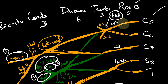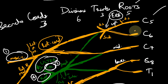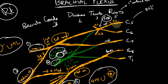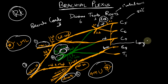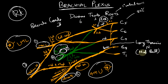From the C5 root arises the dorsal scapular nerve, also called the nerve to the rhomboids. A nerve arising from contributions of C5, C6, and C7 is the long thoracic nerve, also known as the nerve of Bell. This nerve supplies the serratus anterior muscle and is also called the nerve to serratus anterior.